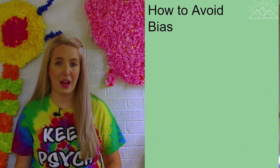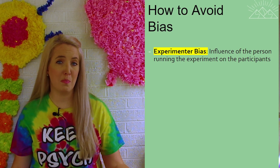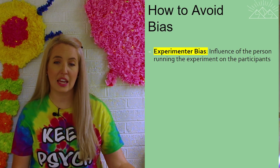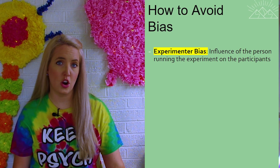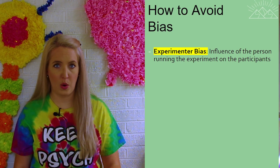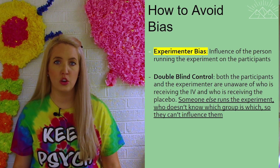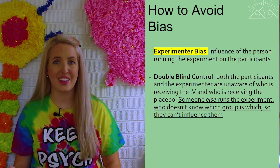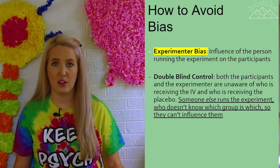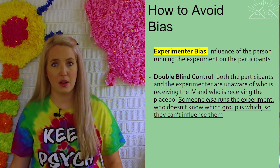We might also run into bias from the experimenters. If I know who's receiving the caffeine or the placebo, I might change my behavior and how I treat my subjects to get the results I want. So I really need to take myself out of the equation as well. A double blind control is when both the participants and the person running the experiment don't know who's in the experimental and control group, so they can't influence behavior. I could have another person who doesn't know who received the caffeine or the placebo come in to measure heart rate so their behavior doesn't affect the outcome.